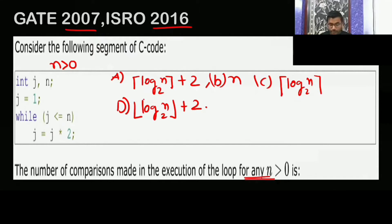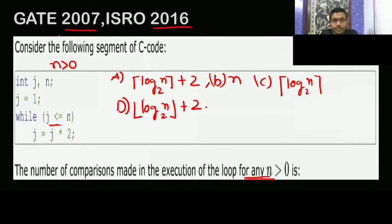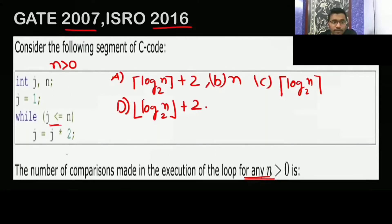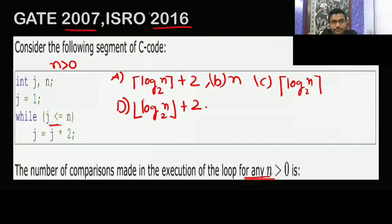When I take n equal to 2^5, the first condition: j is initialized to 1. Now the while loop checks: is j smaller than or equal to n? So 1 is smaller than 2^5 — yes, it goes inside the while loop. Then j becomes j times 2, so j becomes 2. Again the while loop checks whether j is smaller than or equal to n.